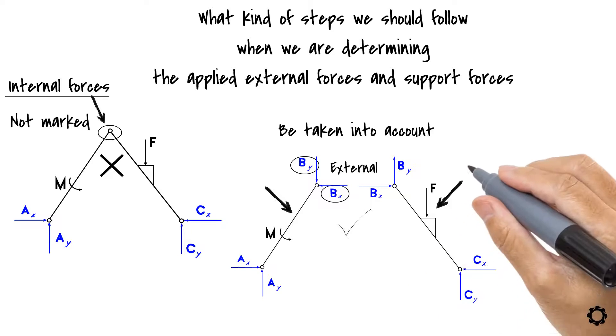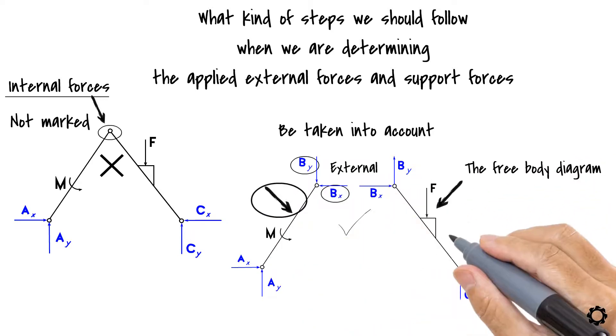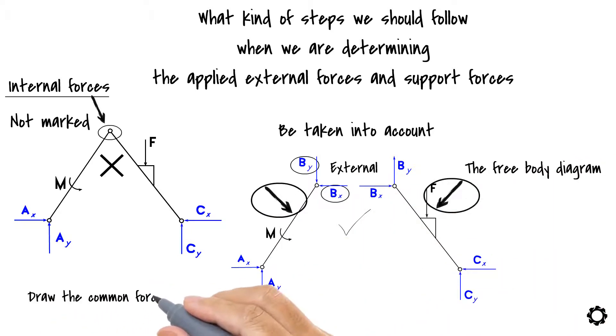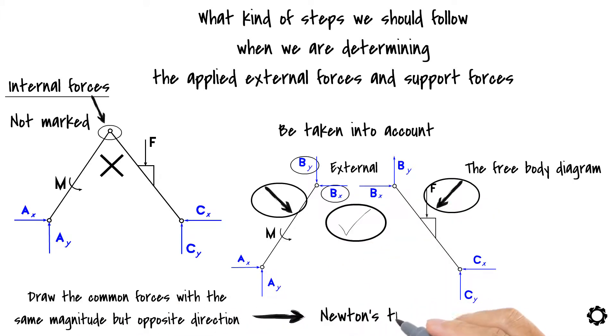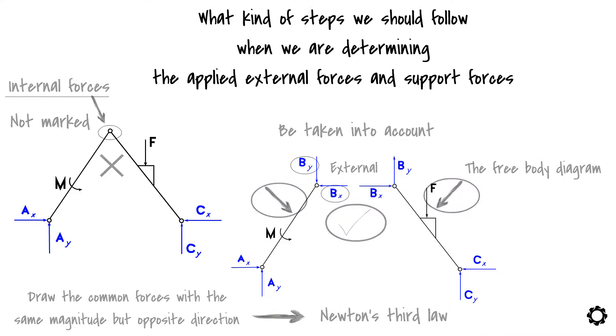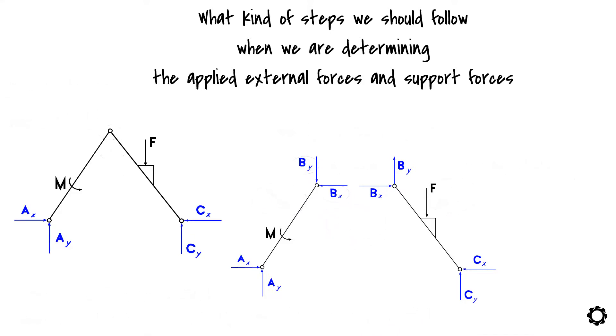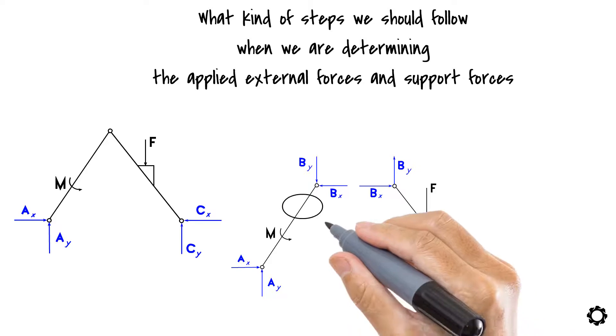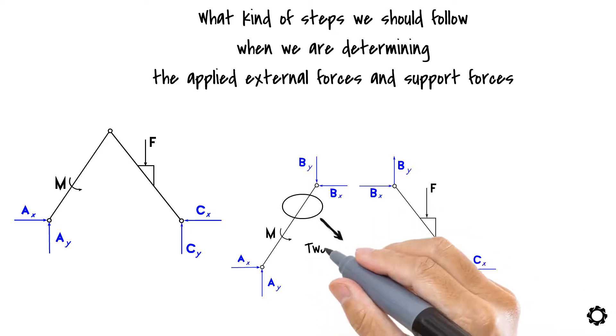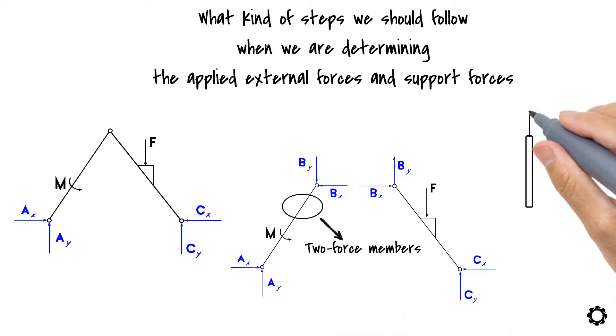Also, if we would like to draw the free body diagram of parts which are in contact, we should draw the common forces with the same magnitude but opposite direction onto the mentioned diagrams. This is based on Newton's third law. We should also keep in mind that the frame or machine may consist of trusses which act as two force members which have equal but opposite collinear forces acting at their ends.